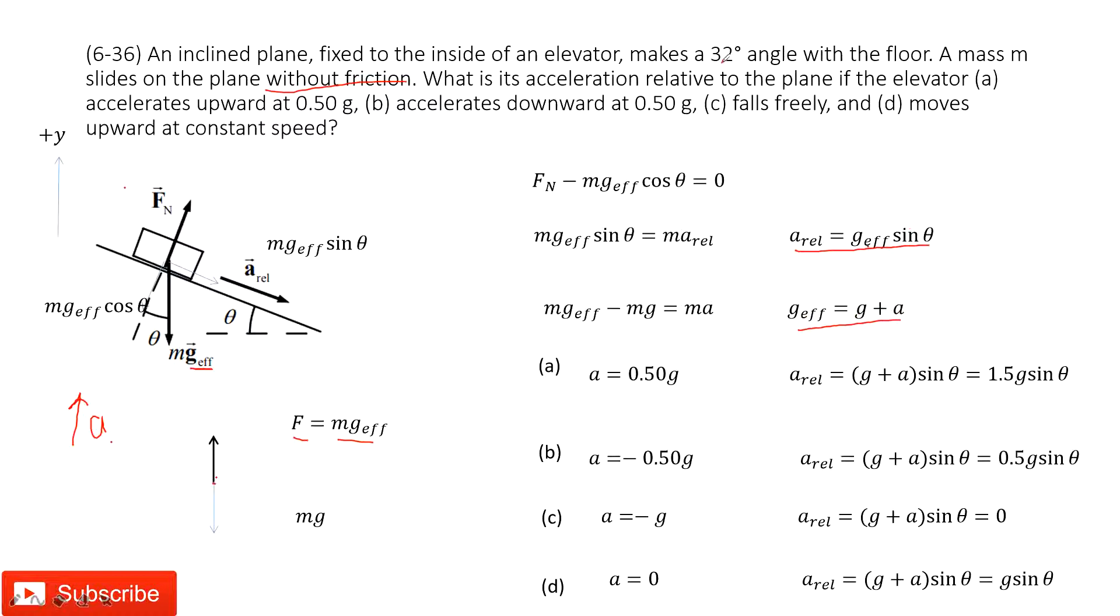Now, we can see, in the first situation, it tells us the acceleration is up, 0.5g. So, the acceleration is positive 0.5g. We input this acceleration inside, we get the final answer, 1.5g sine theta.